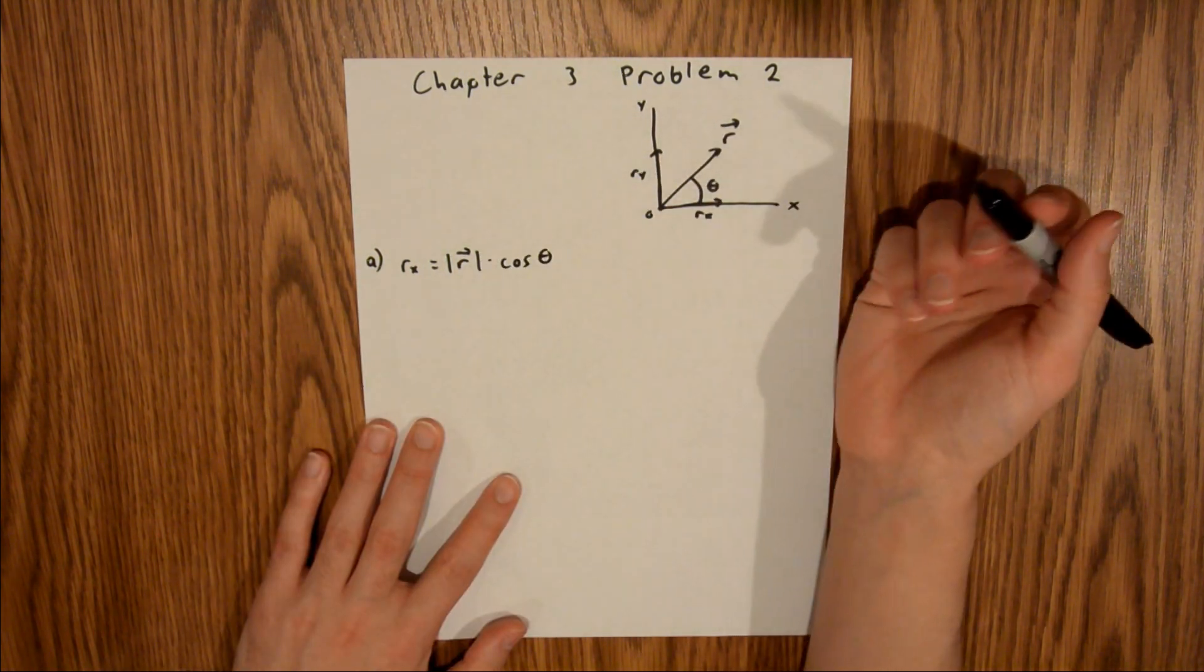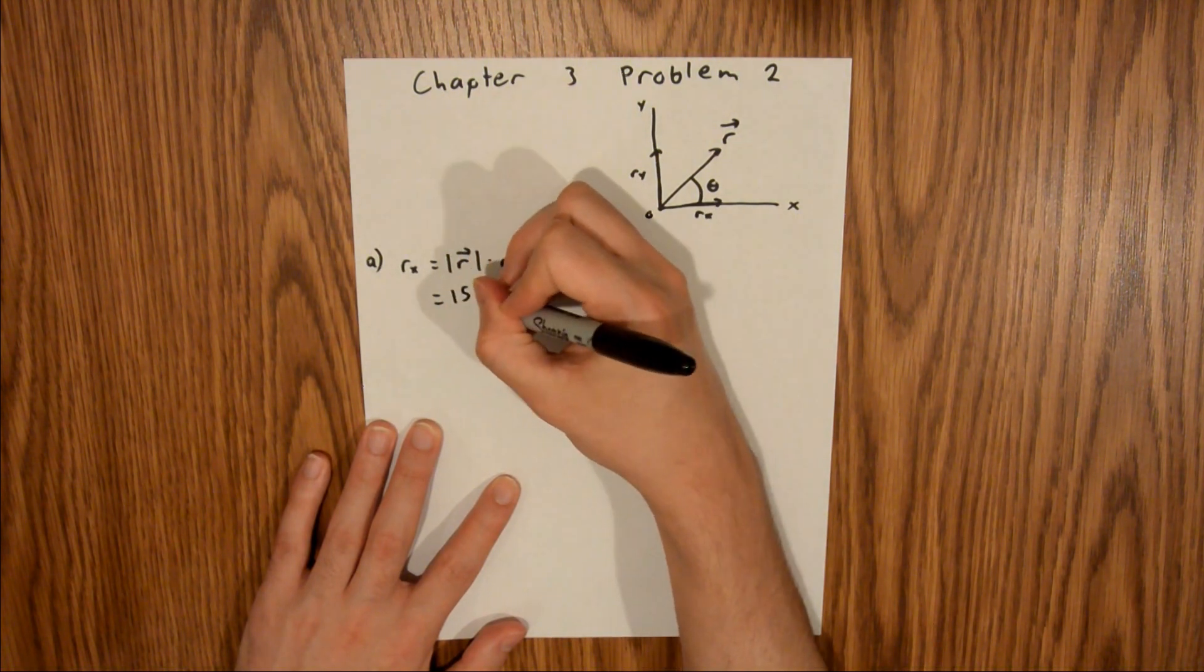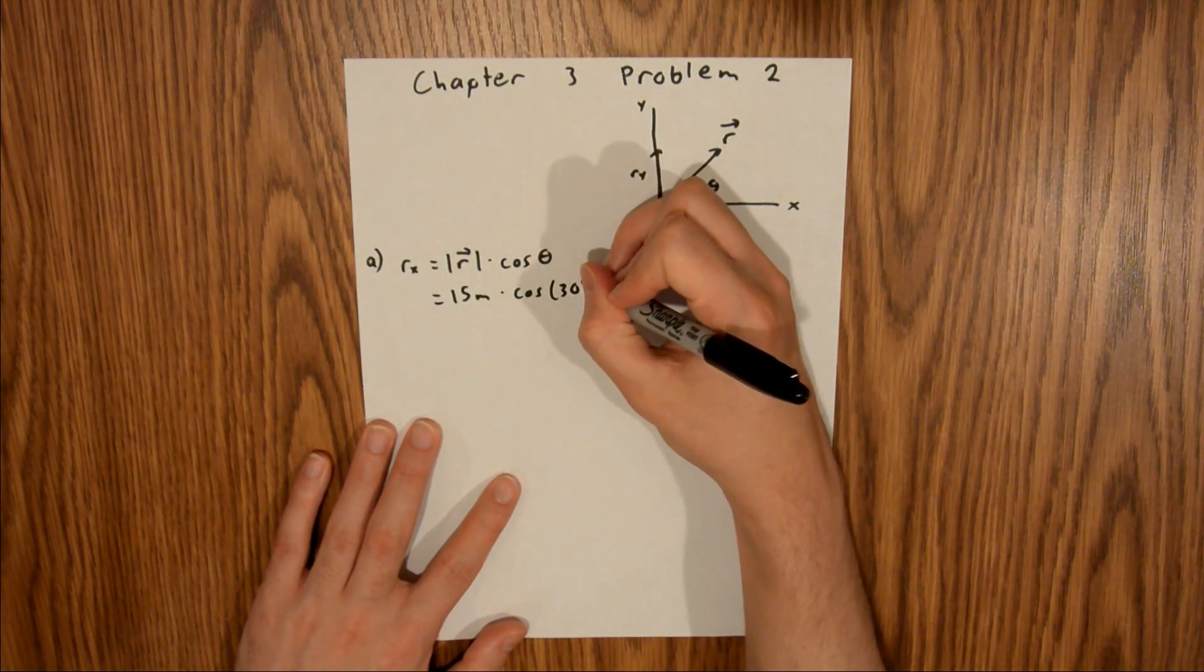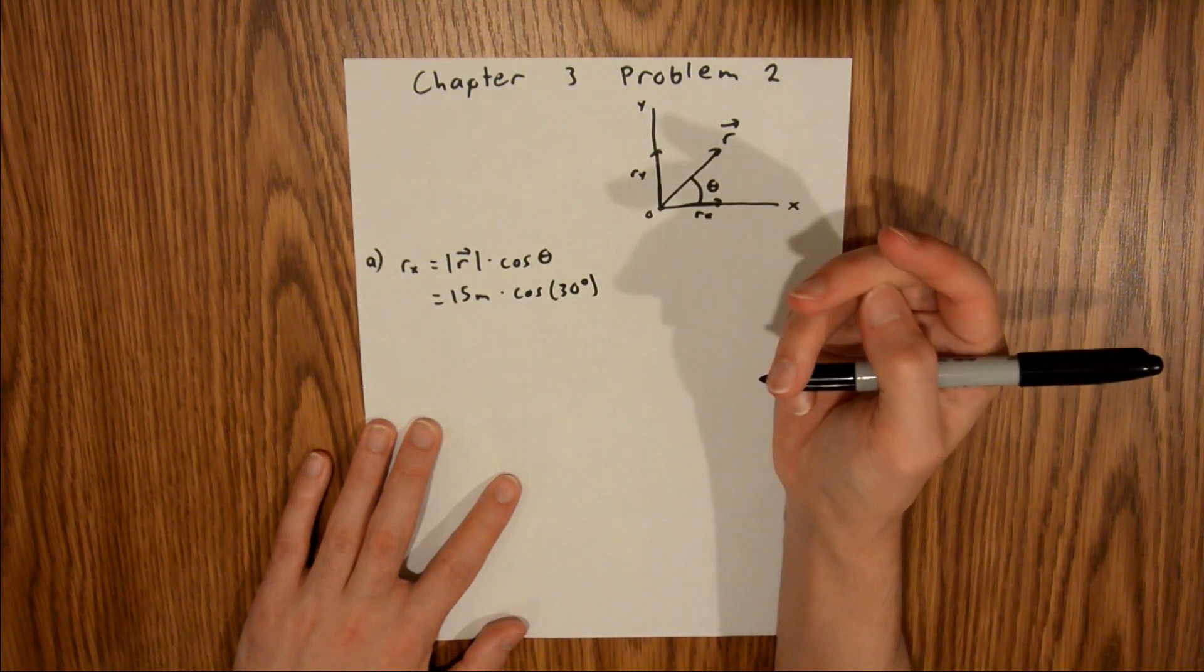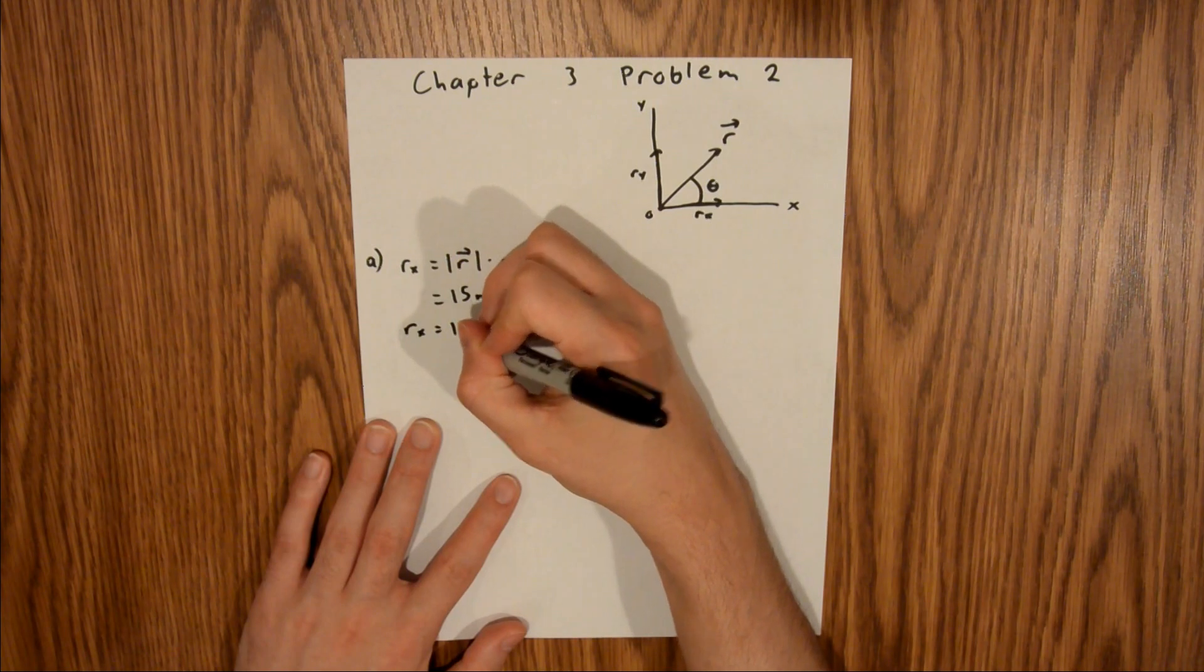We are given both the magnitude and the angle in the problem, so we can plug this directly in. This is equal to 15 meters times the cosine of 30 degrees. And if you plug that into your calculator, you will find that the x component of r is equal to 13 meters.